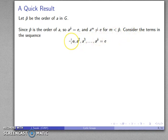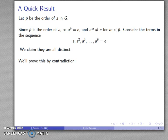Consider the terms of the sequence a, a², a³, ..., a^p̂ = e. We claim that all elements of this sequence are distinct.